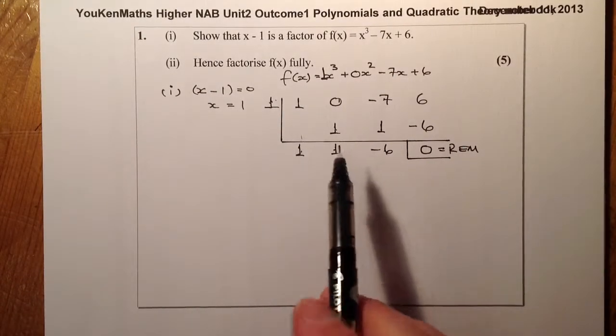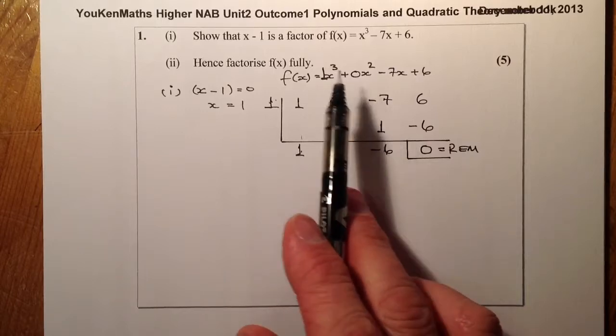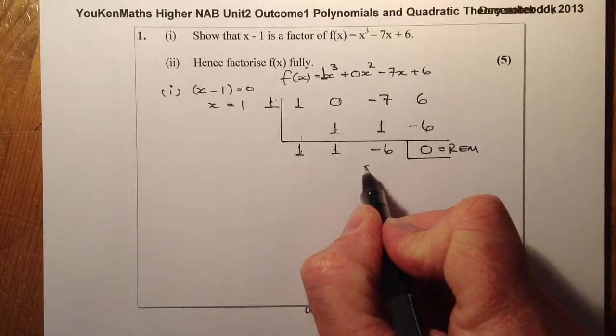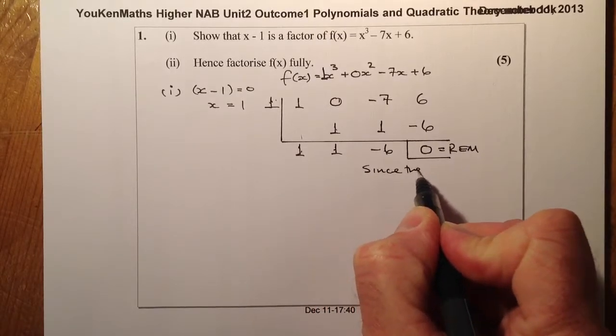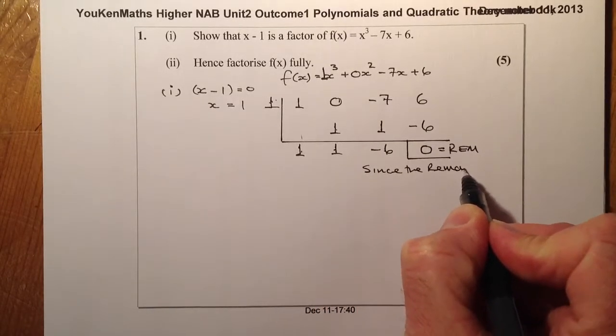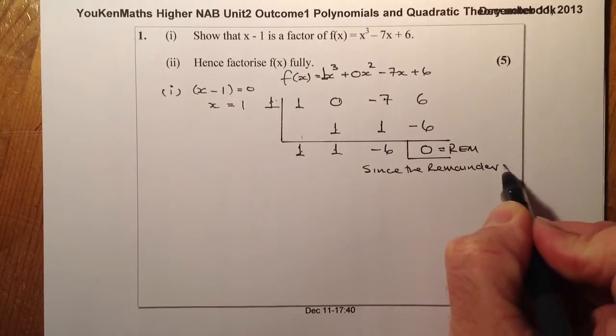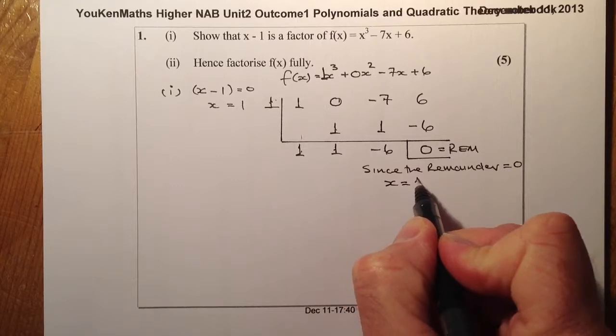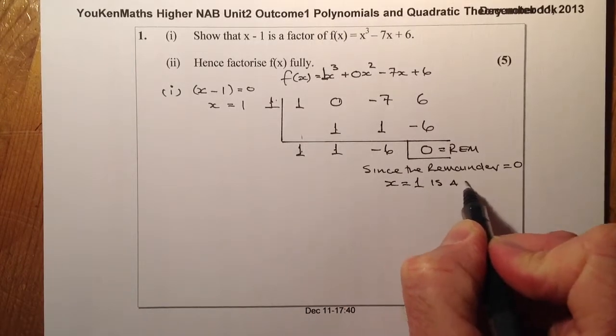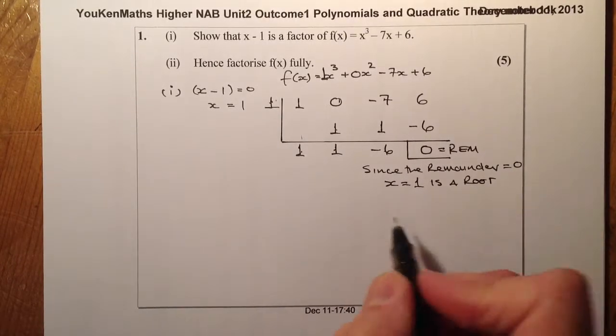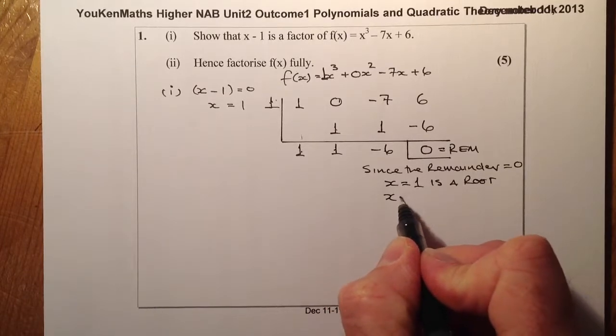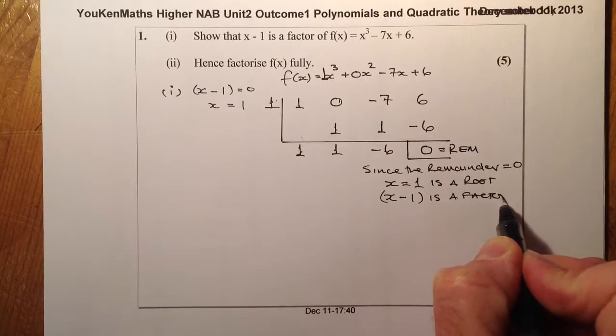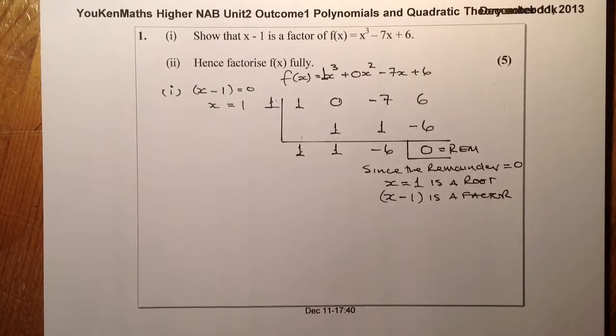To finish off with the question here for part 1 to show that x minus 1 is a factor, what I'll say is that since the remainder equals 0, I'm going to say first of all with that there, x equals 1 is a root, and then the bit that I've been asked to do, x minus 1 is a factor. So that's part 1 complete.